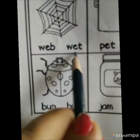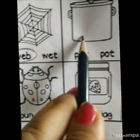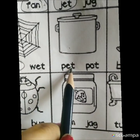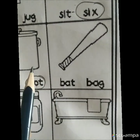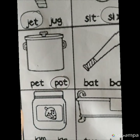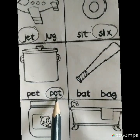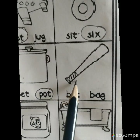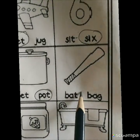This is web. Web and wet. It's not wet, it's web. This is pot, pot. It is pet and pot, it is pot. Mixed sounds are here. See, it's A sound, it's I sound, it's E sound, it's O sound.